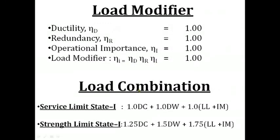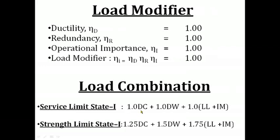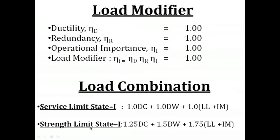For load combinations: while designing the deck, we will use the service limit state 1 with load combination factors — dead load of structural component 1, dead load of wearing surface 1, live load and impact load 1. While designing the girder, we will use the strength limit state 1 with load combination of 1.25 dead load of structural components, 1.5 dead load of wearing surface, and 1.75 live load and impact load.